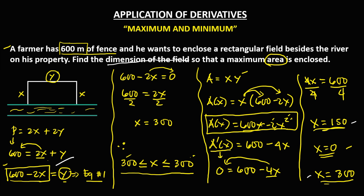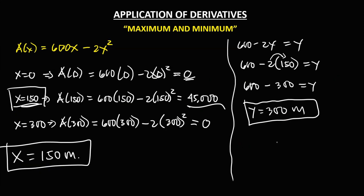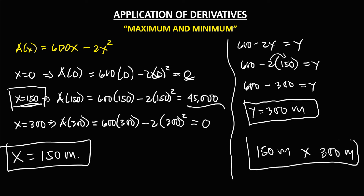Therefore, the dimension of the field so that the maximum area is enclosed is 150 meters by 300 meters. This is the final answer.